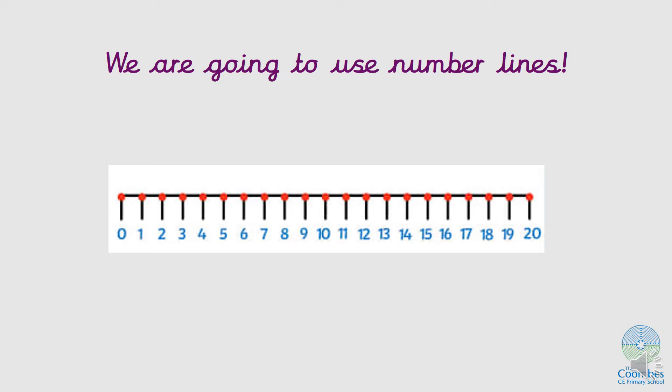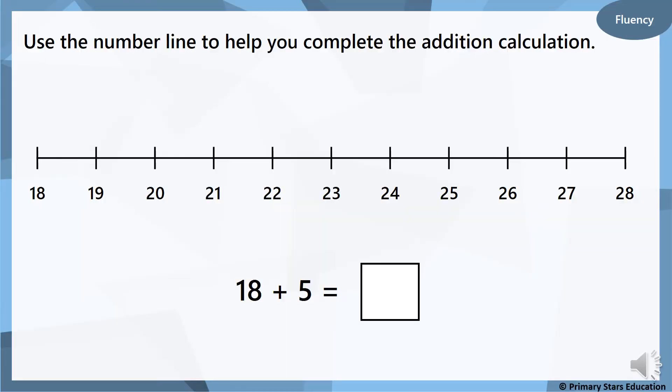So here we have an addition calculation. 18 add 5 equals. Now we have our number line, which starts at 18. So that's handy. And it's going up in ones. So to use the number line, we can bounce along the number line five times to find out our answer. So we could go 1, 2, 3, 4, 5. Remember, we don't say one on this one. It's the next number we say one on.